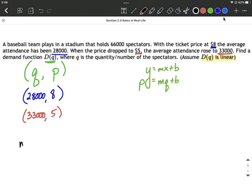From here, let's go ahead and find the slope of our linear function, this line, by doing Y2 minus Y1 over X2 minus X1. Now you can choose either one to be your sub 1s and the other one to be your sub 2s. I'm going to start with a Y value of 5 minus 8 over the corresponding 33,000 minus 28,000.